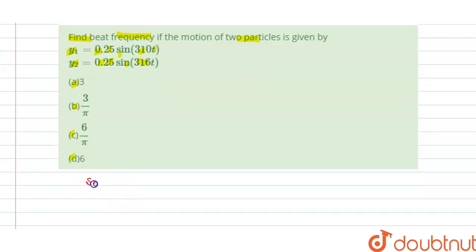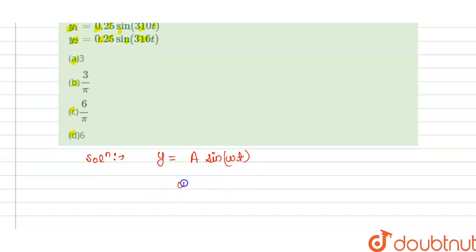The solution of this question: we know that the standard equation of particle motion is given by y = A sin(ωt). A is the amplitude and ωt is the phase. Omega is the angular frequency.